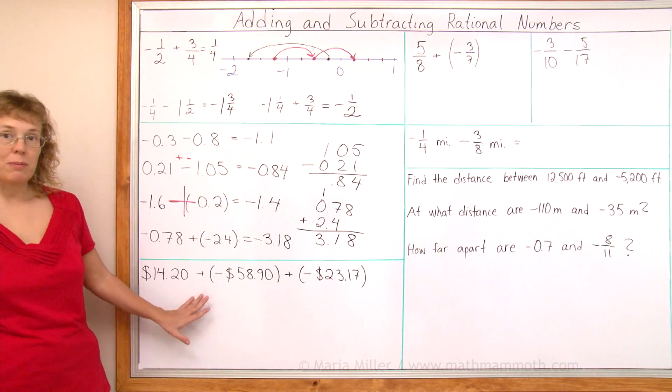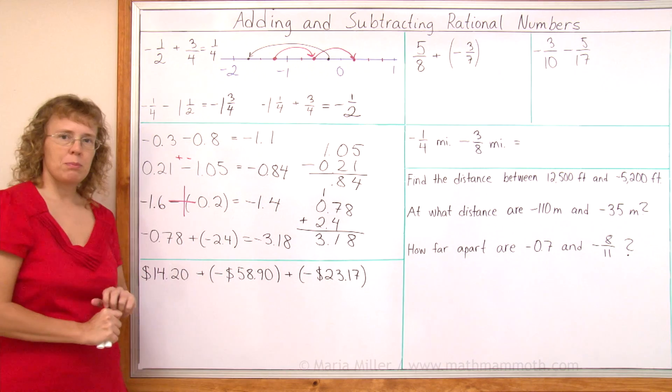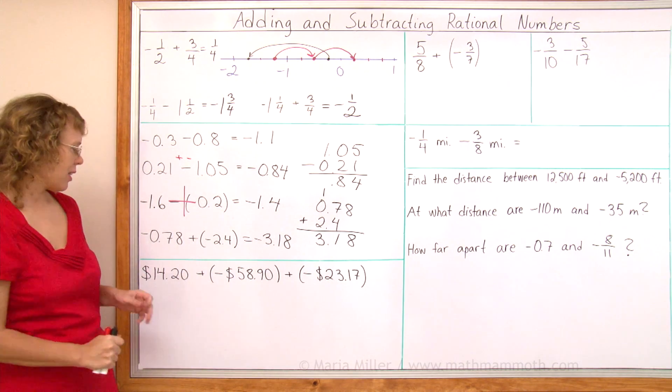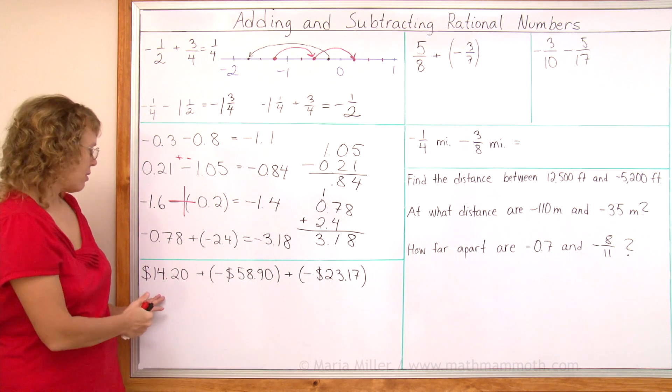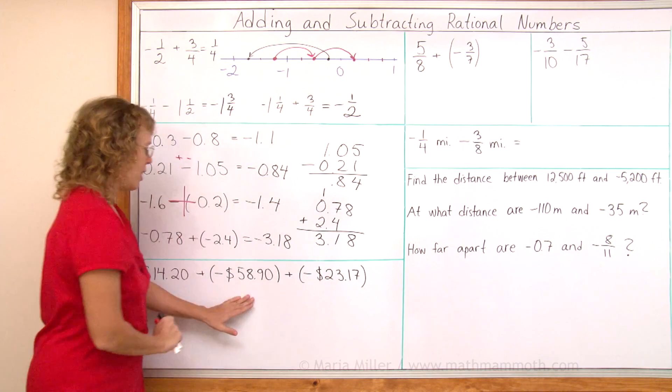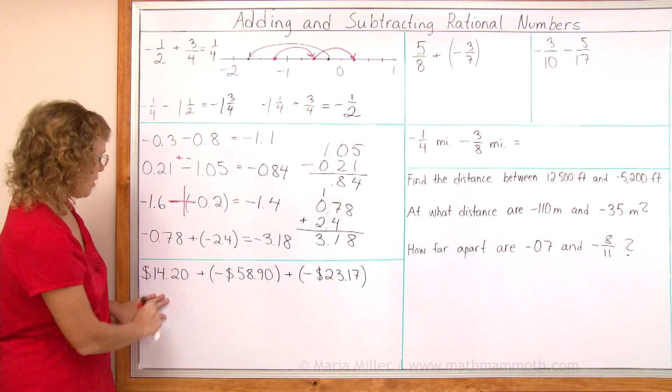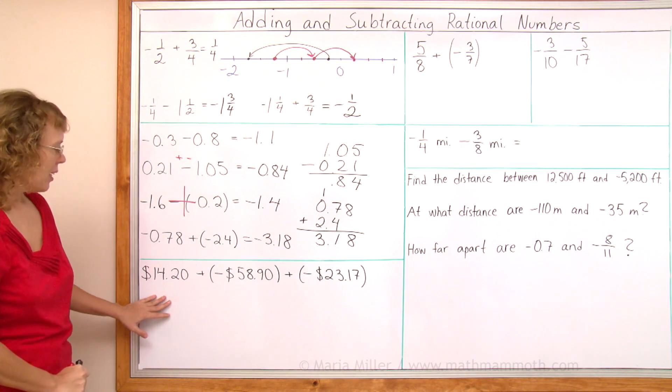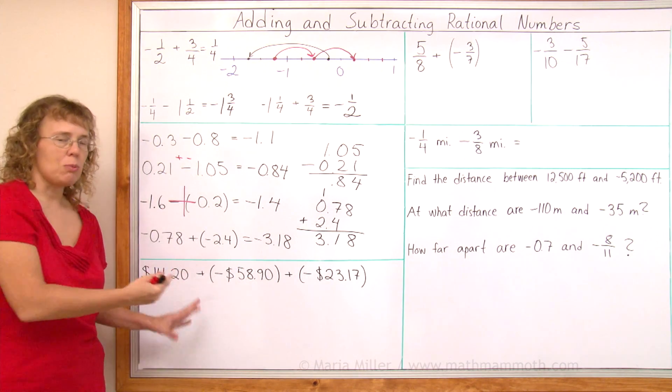Here's an addition problem with money amounts. And this might come from, for example, a bank that is calculating somebody's bank account or credit card account. There's positives and there's negatives. Negatives would be when the money goes out and positive would be when the money comes in or the balance that was there to begin with.